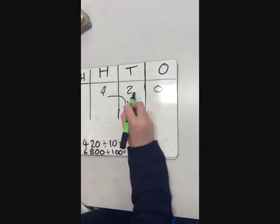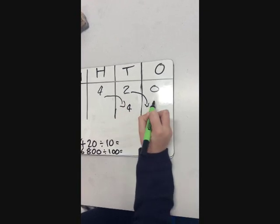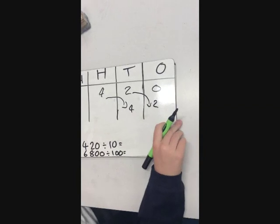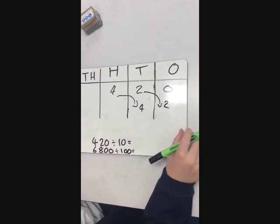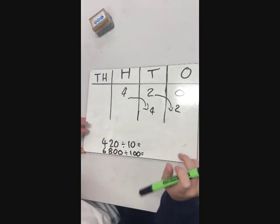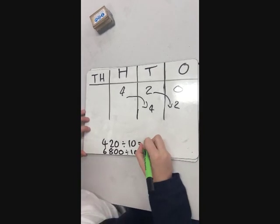So the 4 would be there, and the 2 would be there, and then we're going to get rid of that placeholder because there's nowhere for the 4 tens and the 2 ones to go. So that answer is 42.